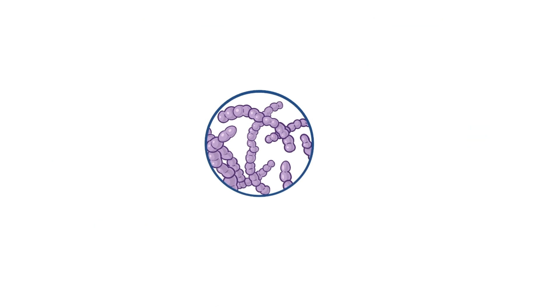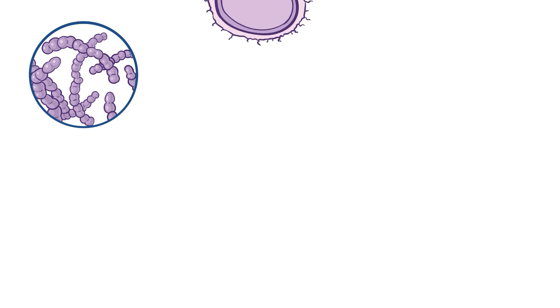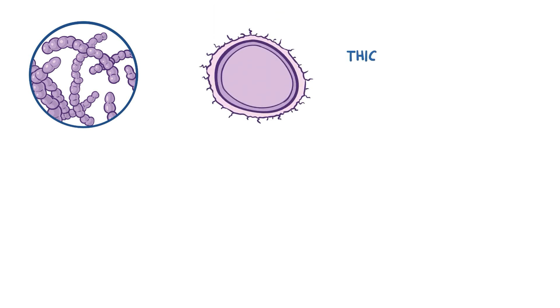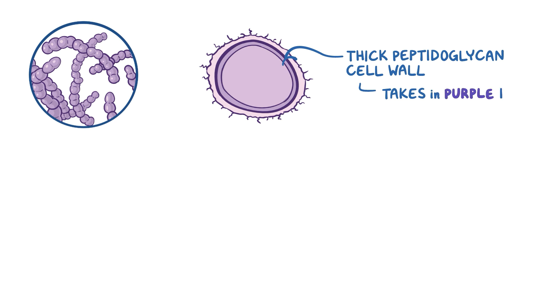Now, a little bit of microbe anatomy and physiology. Strep pneumoniae has a thick peptidoglycan cell wall, which takes in purple dye when gram-stained, so this is a gram-positive bacteria.